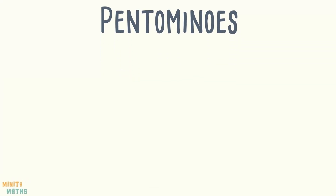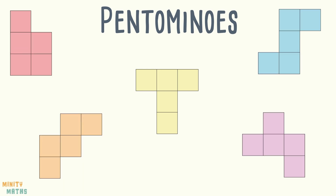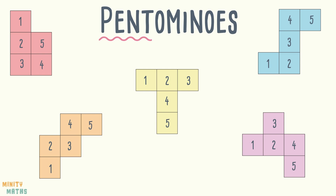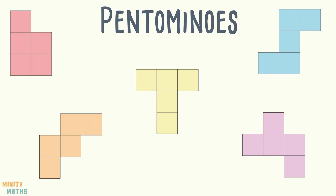This is a pentomino. These are also pentominoes. Can you see a pattern here? A pentomino is a 2D shape formed of five connected equal squares. See how many different pentomino shapes you can make.